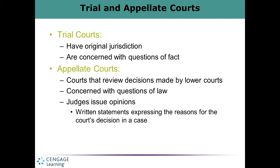Unlike trial courts, appellate courts typically issue written decisions. You will have a written decision from an appellate court which is published. Trial court records exist but are not routinely published, whereas appellate court records are published — traditionally in books, but now much of this is available online. These published documents are called opinions: they are the record of the court and how it decided, laying out the law, how it was followed, and the judge's opinion.